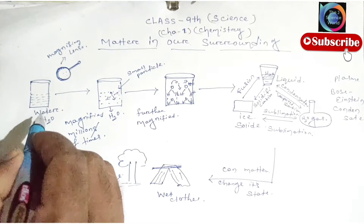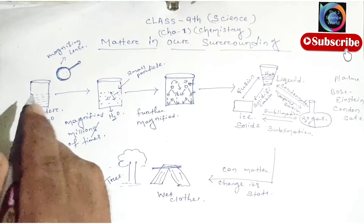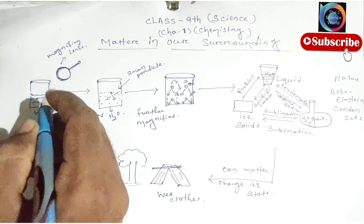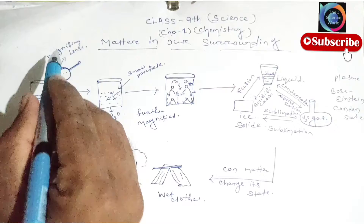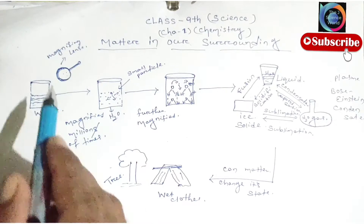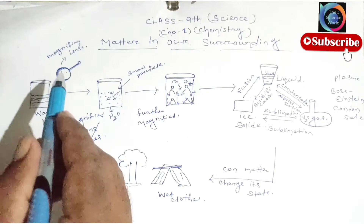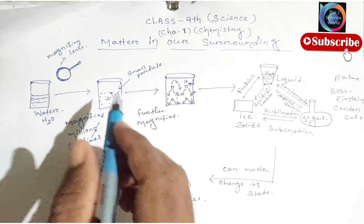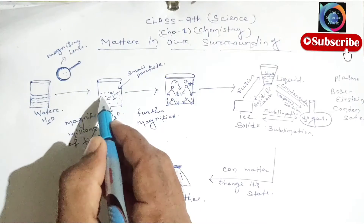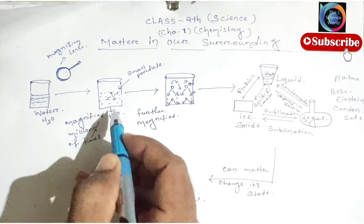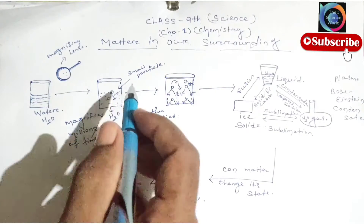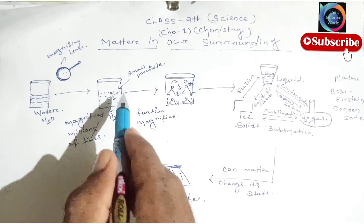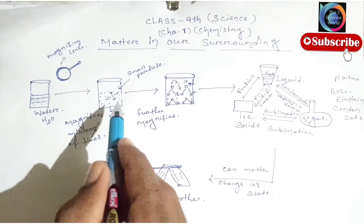When we take some water and magnify it millions of times with the help of a magnifying lens, our water looks like it is made of some random moving particles. These small particles are moving around in this container.